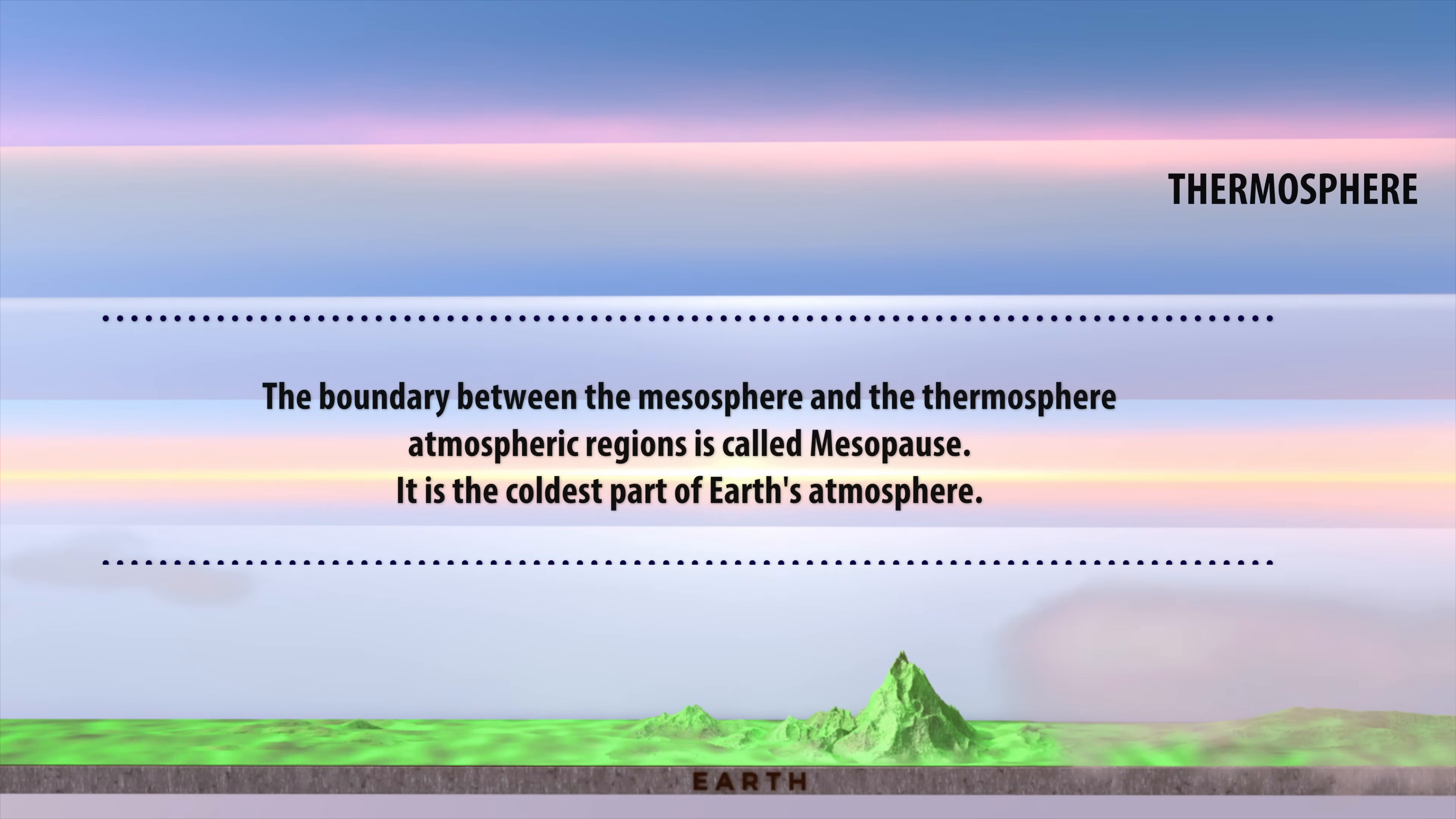The boundary between the mesosphere and the thermosphere atmospheric regions is called the mesopause. It is the coldest part of Earth's atmosphere.